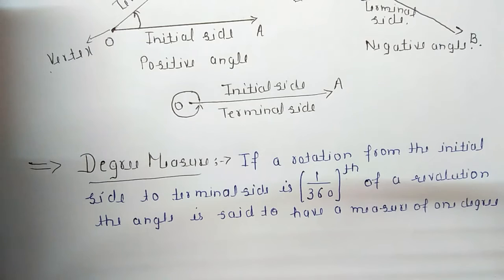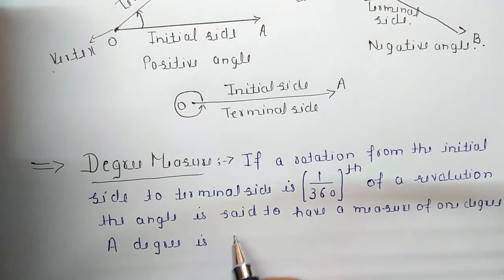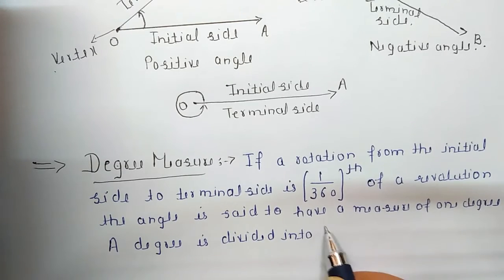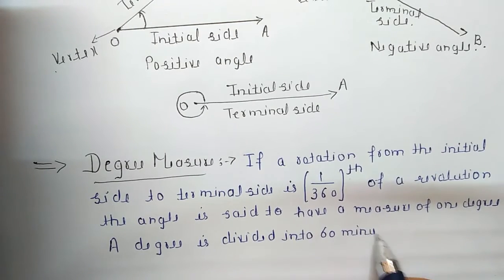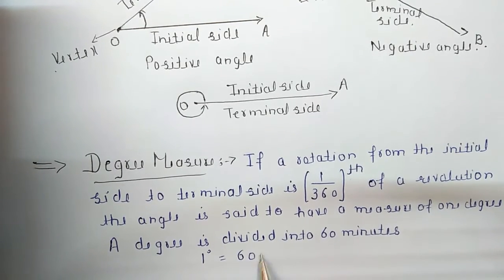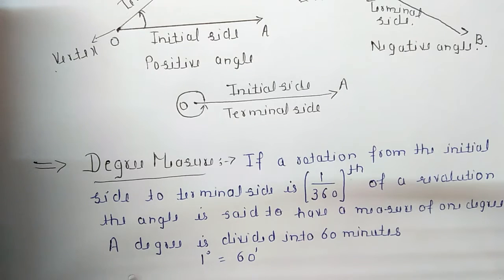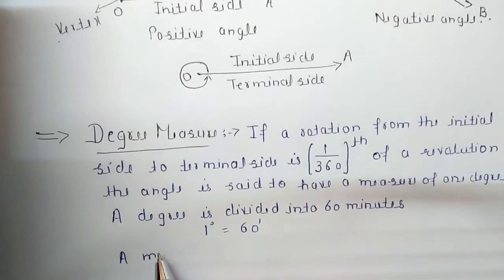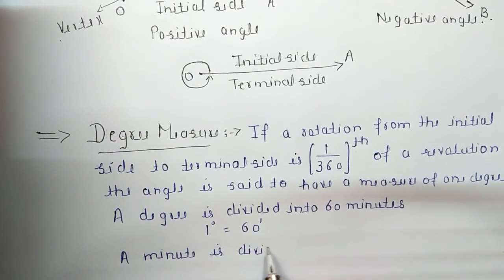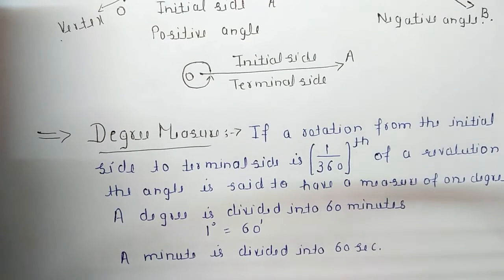If a degree is divided into 60 minutes — 1 degree is equal to 60 minutes, where the apostrophe symbol represents minutes — and a minute is divided into 60 seconds, where the double apostrophe symbol represents seconds.